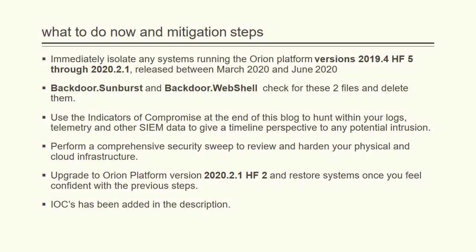What should be the mitigation steps now? There is a release version from March 2020 and June 2020 — update to the latest version of the Orion platform. Make sure you have removed these two files: backdoor.sunburst and backdoor.webshell. Search for these two files in your environment and if present, delete them. Also use the indicators of compromise — IOCs including IPs, domains, hashes, and URLs — all available in the description below. Check your environment for these IOCs and block them.